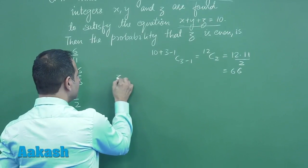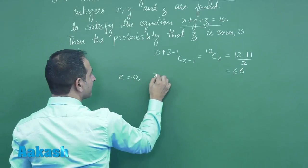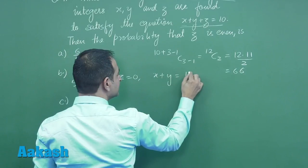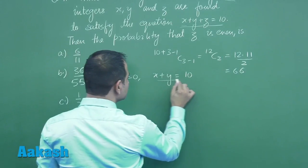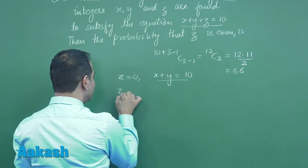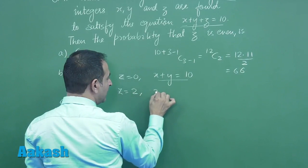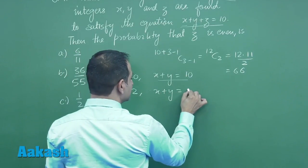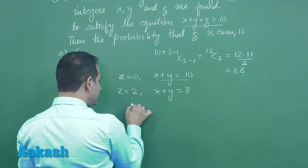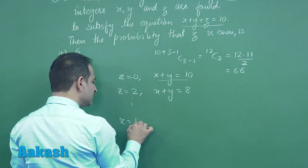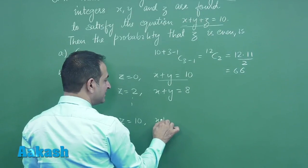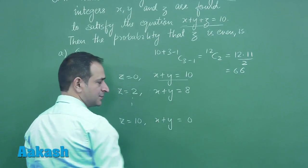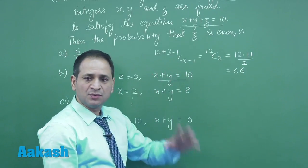Now when z is 0, x plus y is equal to 10. Again when z is 2, x plus y is equal to 8. Similarly, when z is equal to 10, then x plus y is equal to 0. We can count the total solutions.